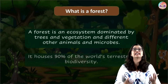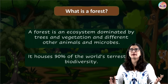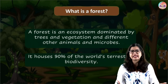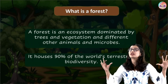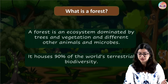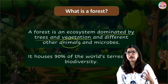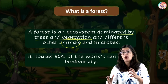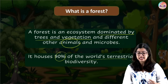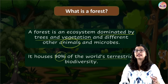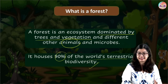First and foremost, let us have a look at what is a forest. A forest is an area which is dominated by trees, vegetation, and different kinds of animals. You see birds, animals on all fours, and microorganisms living in the soil. Forests house about 90% of the world's terrestrial biodiversity, meaning the maximum number of living organisms found on land are mainly seen in the forest.